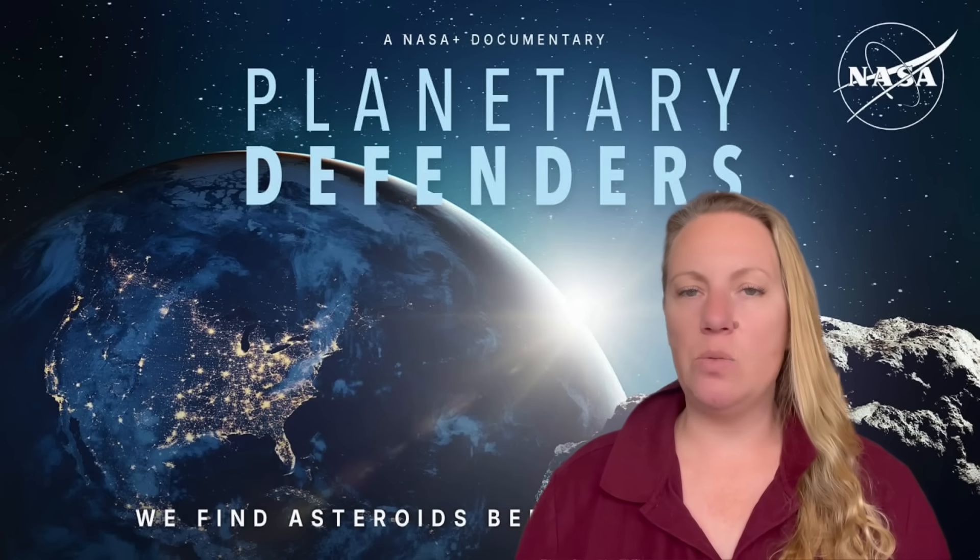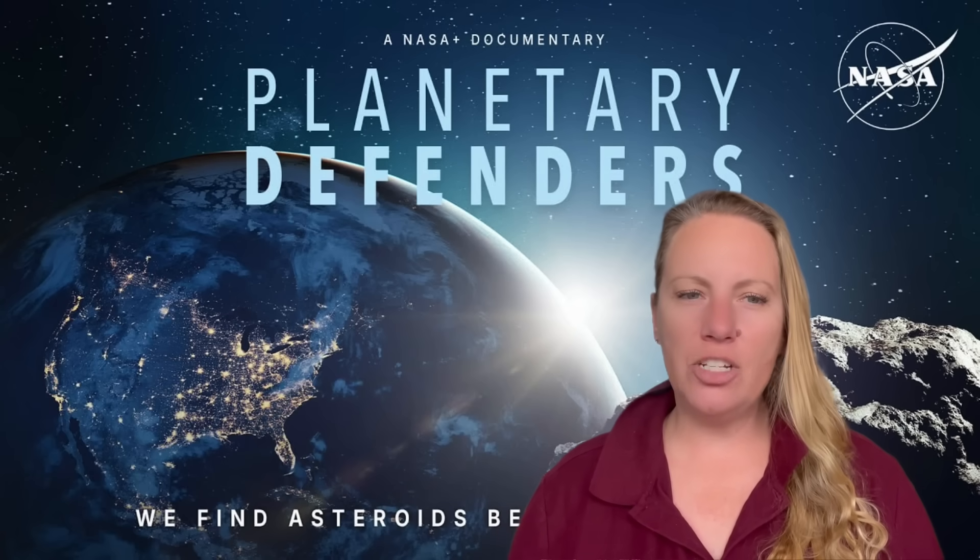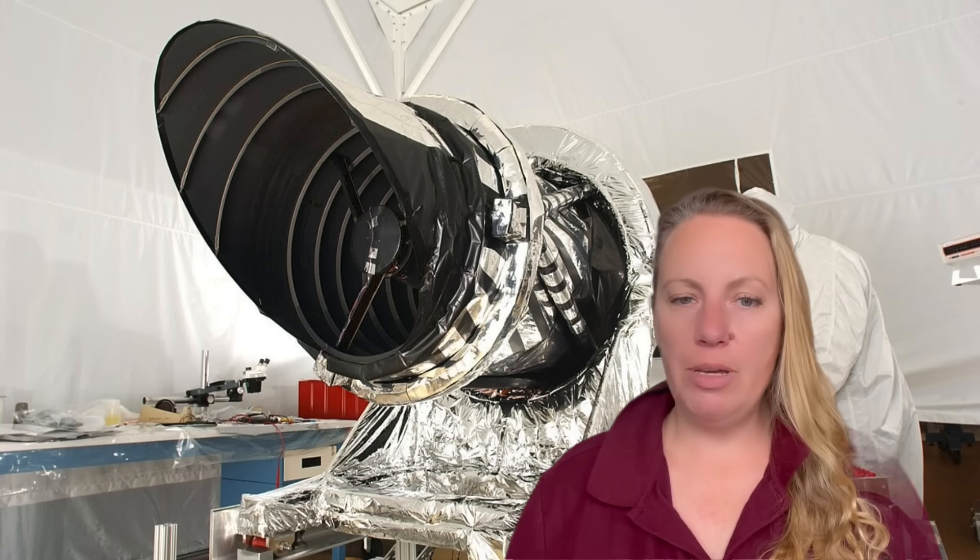So what about the planetary defense and the observational implications? Well, even if this object is natural, the fact that such an object exists and we actually detected it gives credence to the idea that many interstellar objects may traverse our system undetected. That has implications for future detection systems, spacecraft missions, and even how we prepare for the unknowns. Because if an object from another star system can pass through our star system with odd composition or behavior, it definitely opens up questions about material exchange between systems.